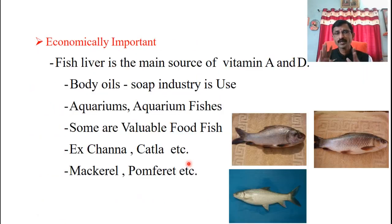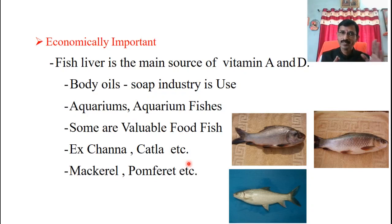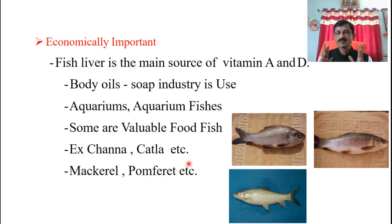Then economically important - what is the purpose and how is fish economically important, as a benefit for persons or human beings, and for marketable value? Fish liver is the main source of vitamins A and D. With the help of this, the contents are saved as medicine and sold in the market at national and international level. Body oil is also important; industries use the body oil of fish. Then one important thing is the aquarium - aquarium fishes are economically important for marketable persons.